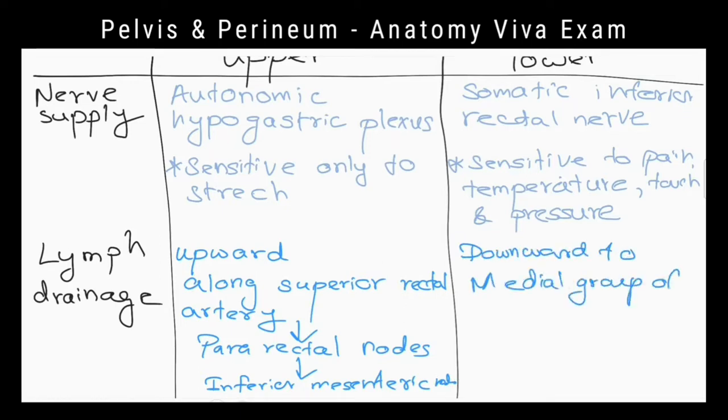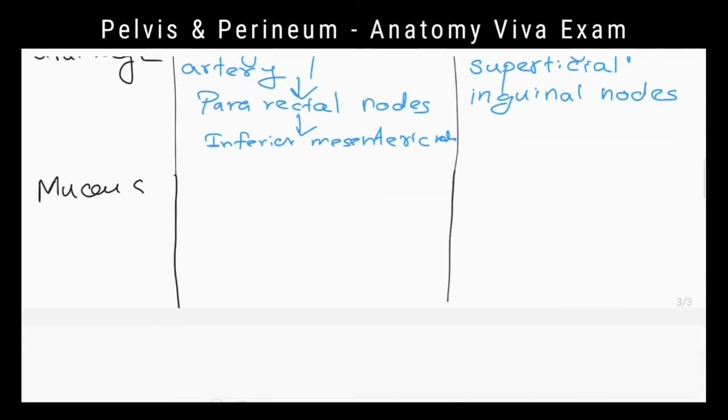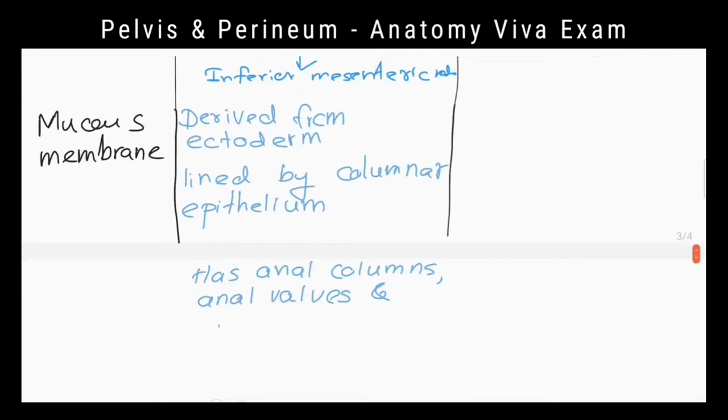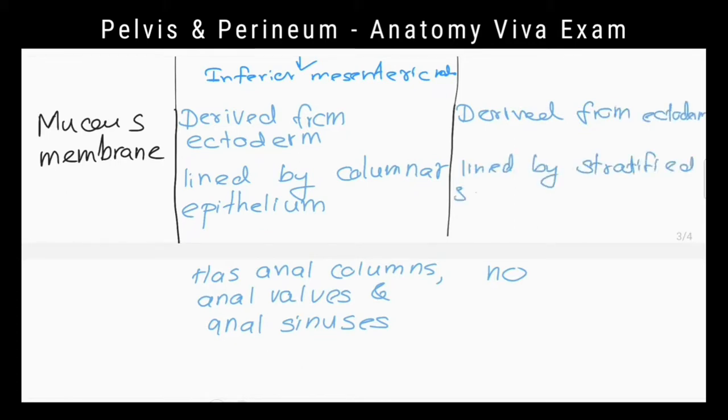Lymph vessels of upper part drain into inferior mesenteric nodes. Lymph vessels of lower part drain into medial group of superficial inguinal nodes. Mucous membrane is derived from endoderm and lined by columnar epithelium in upper half of anal canal. It has anal columns, anal valves, and anal sinuses. But mucous membrane of lower half of anal canal has no anal columns. It is derived from ectoderm and lined by stratified squamous epithelium.